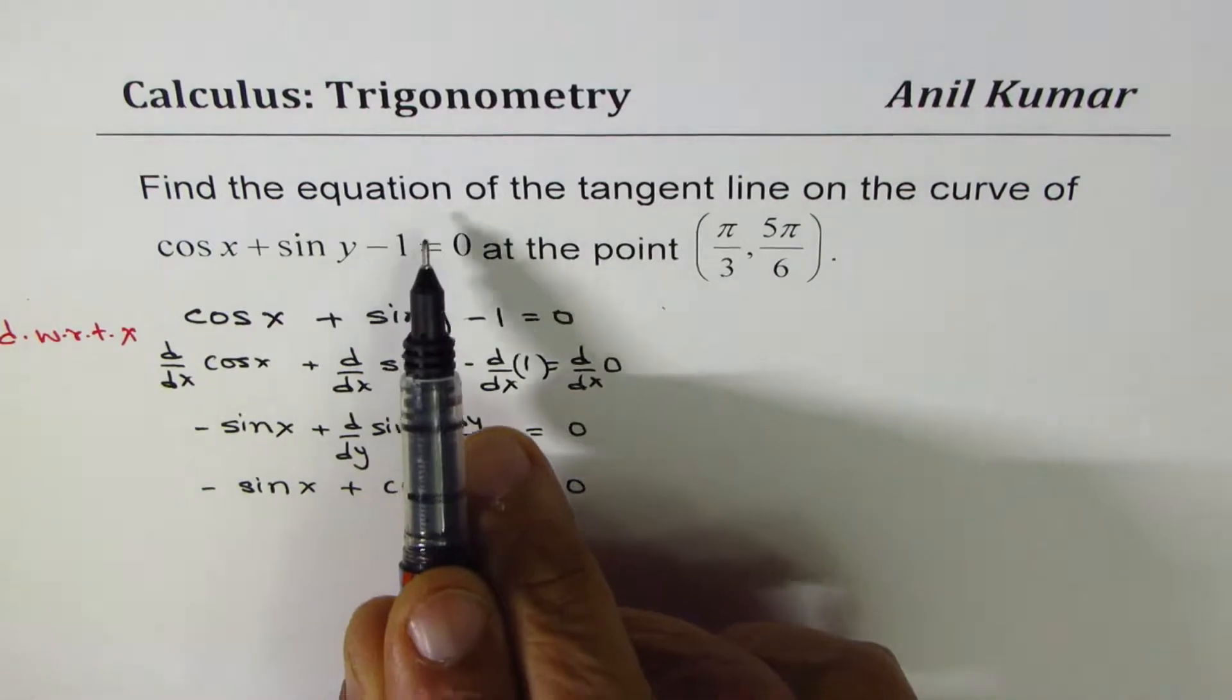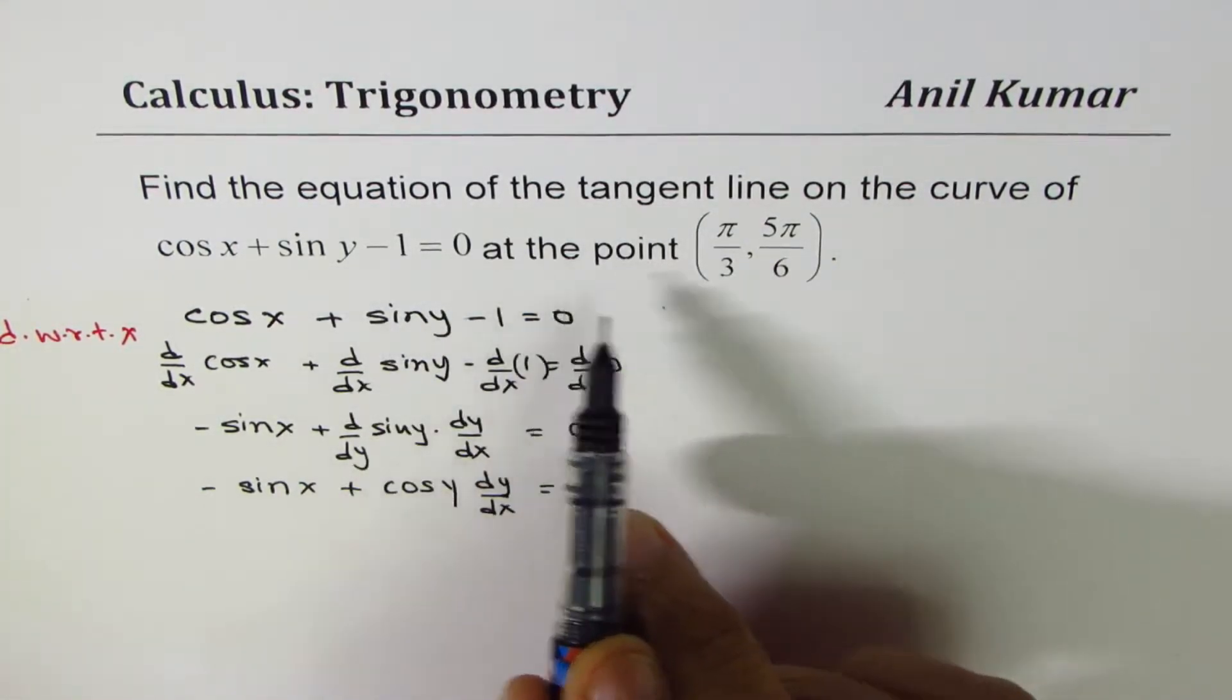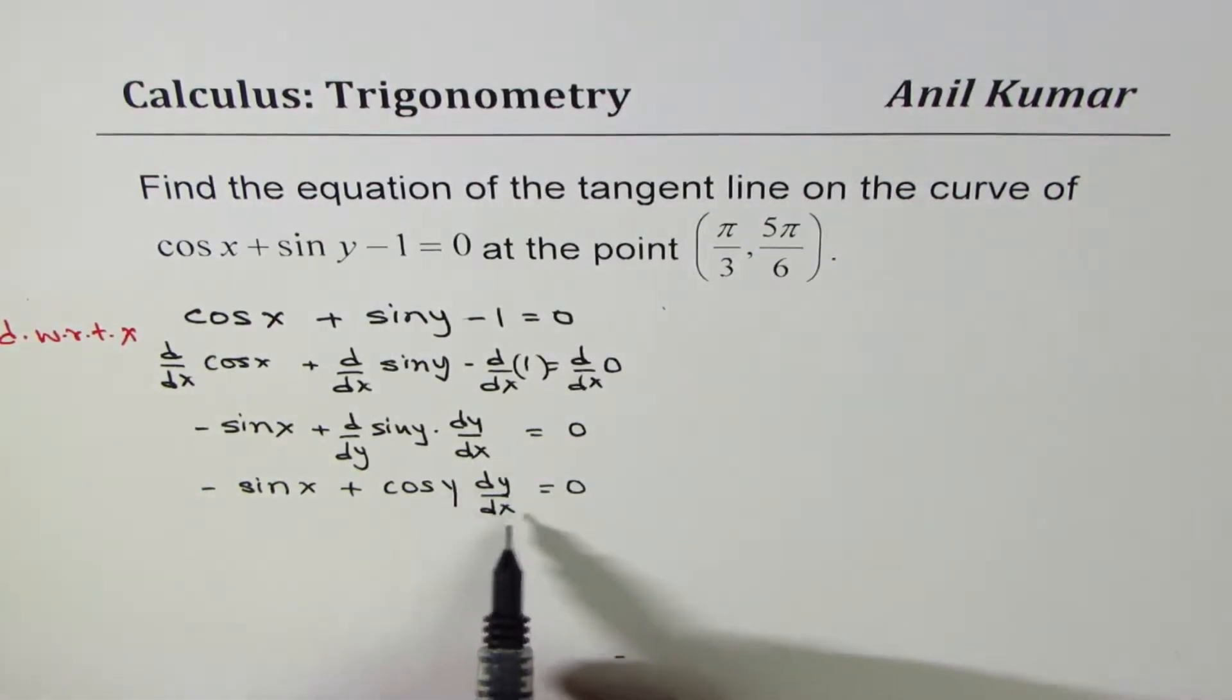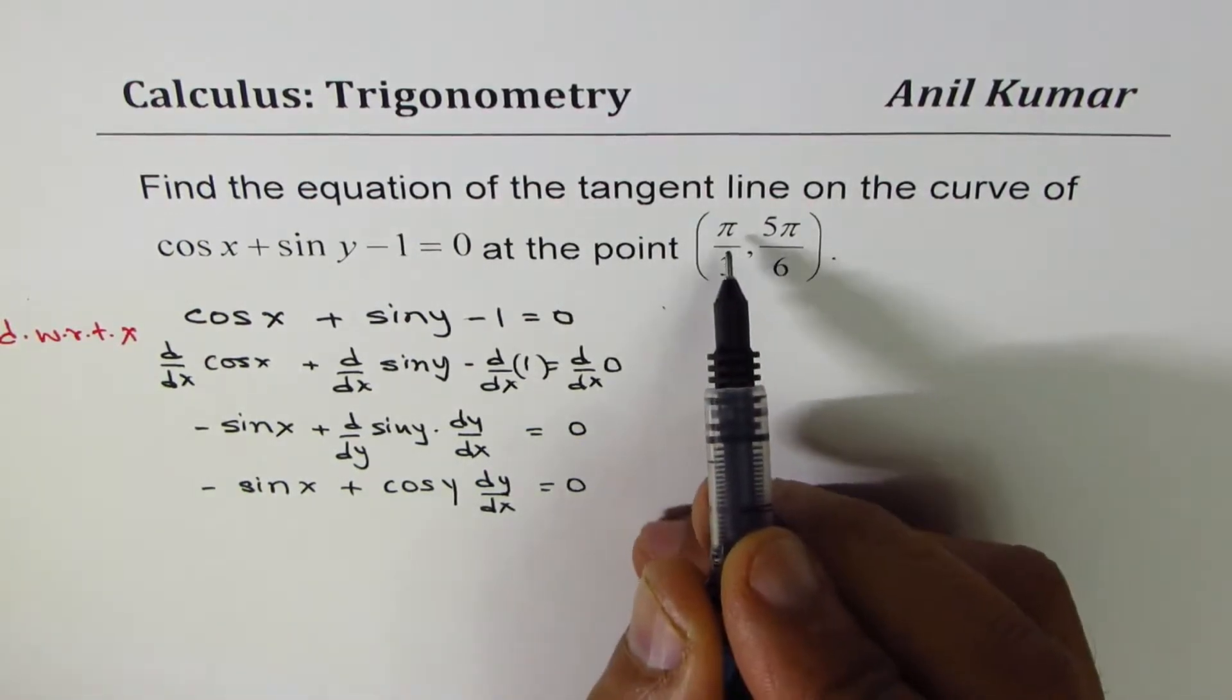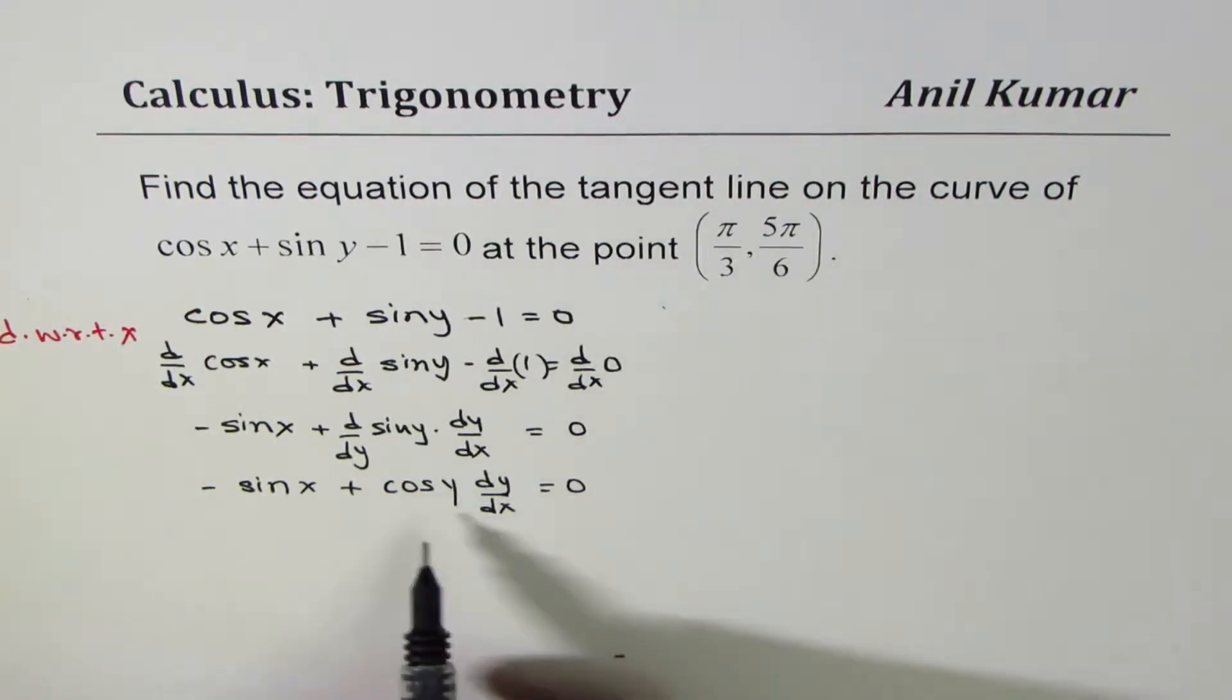We need to find the equation of the tangent line on the given curve at the given point. So basically, we need to find dy/dx at (π/3, 5π/6). That's what we need to find.